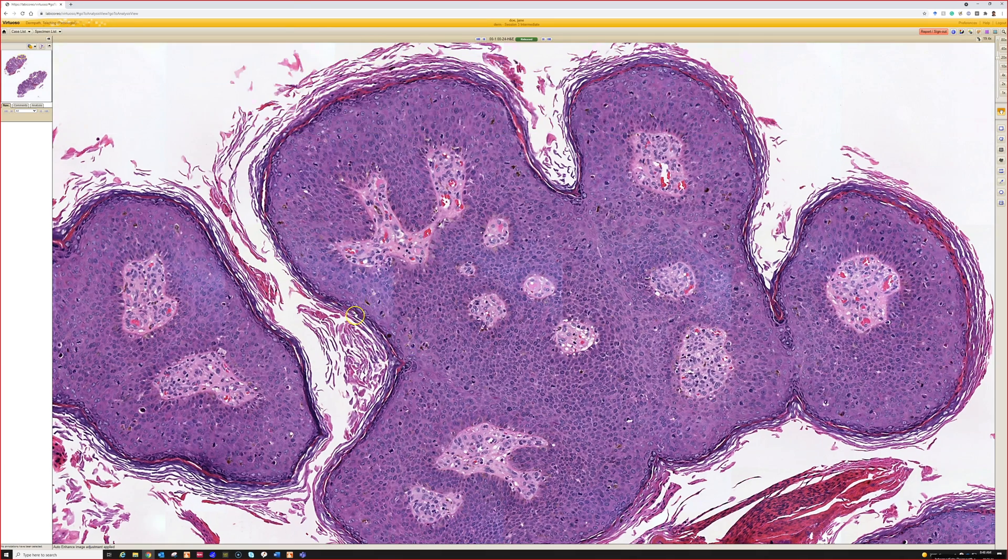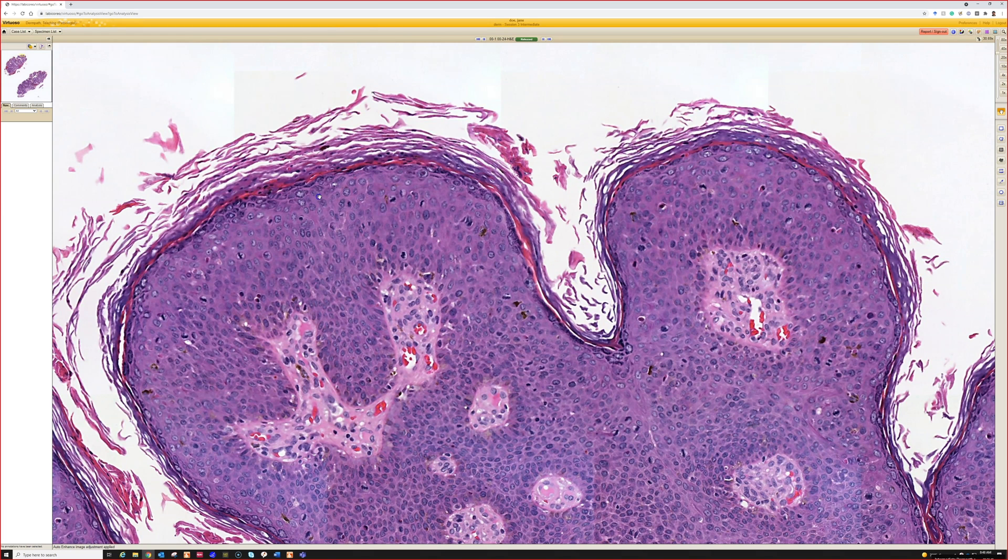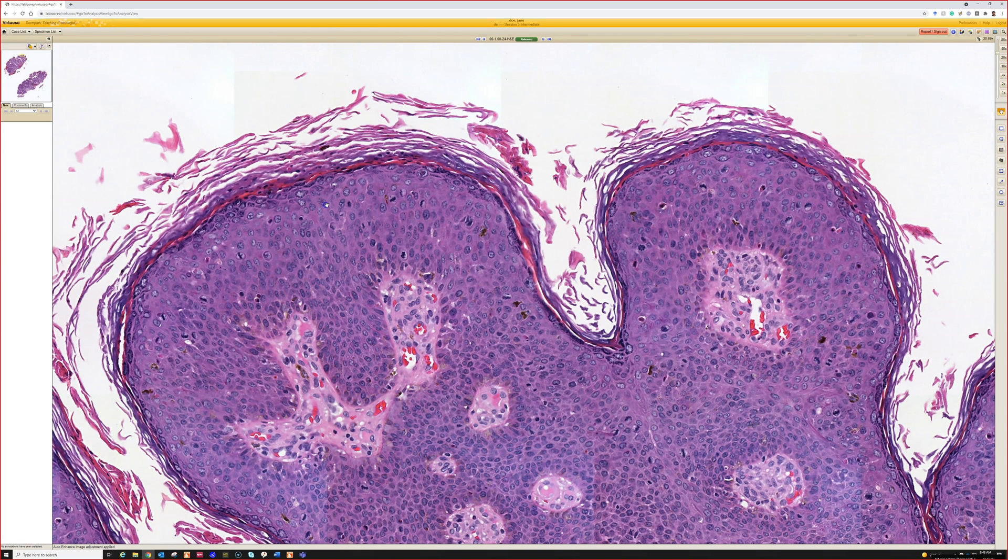So this could be a condyloma with a high grade squamous intraepithelial lesion, H-SIL, which is basically like high grade dysplasia or squamous cell carcinoma in situ. To me those terms are all synonymous in the anogenital area, and it's driven by high-risk HPV.